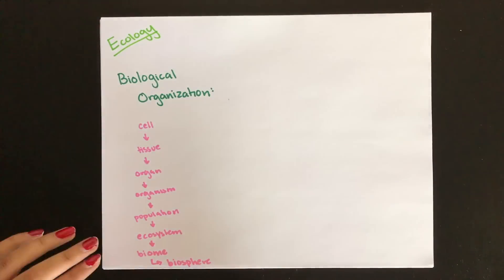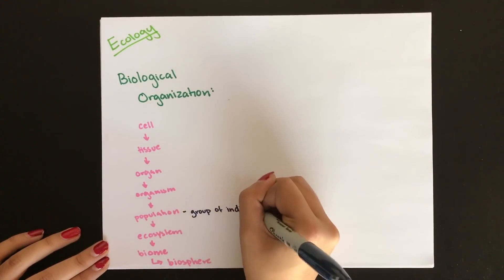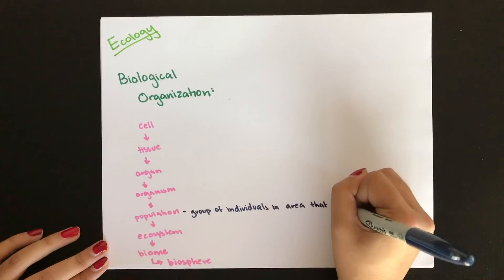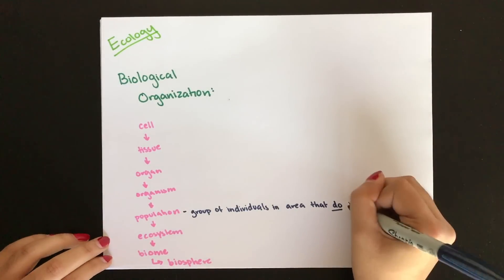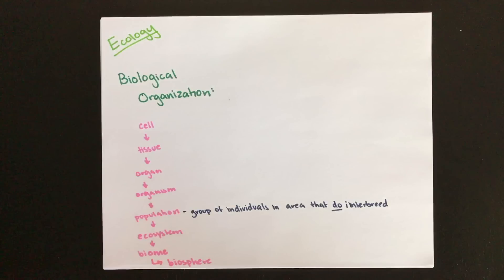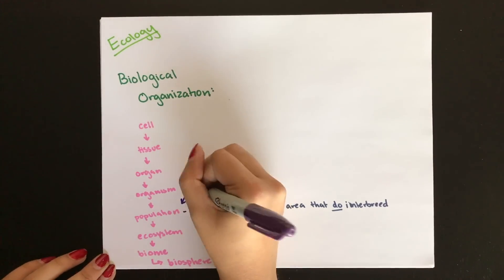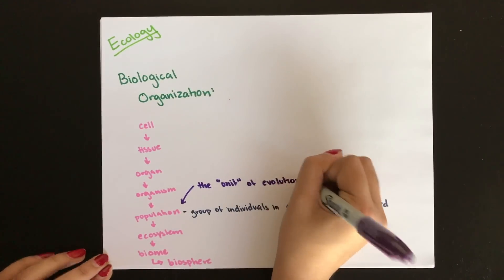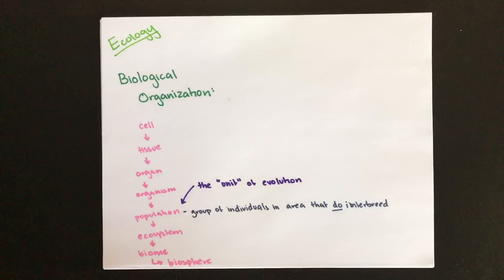We're going to define a population as a group of individuals in a particular area that interbreed. Remember, a species is a group of organisms that can interbreed, but a population includes the organisms that actually are interbreeding. Evolution acts on the population as a whole because evolution can't act on one individual — you don't wake up in the morning and say you're evolving today.